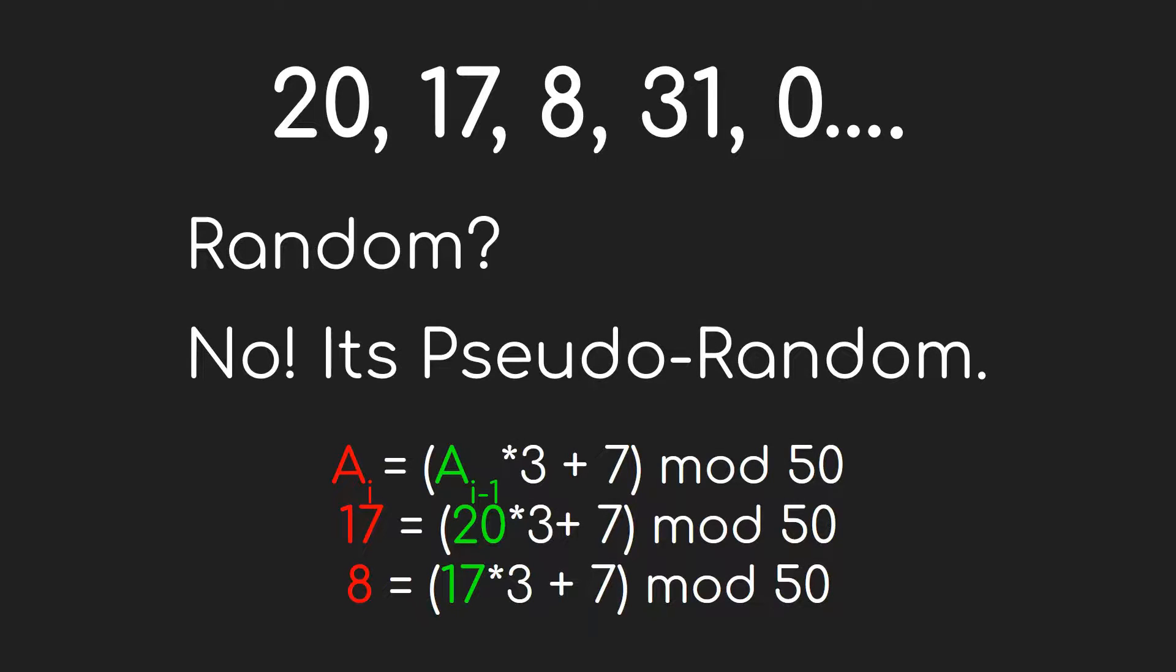For example, this sequence of numbers might first appear to be random, but once you find the relation between them, they are not random anymore. This is an example of a pseudo-random sequence.